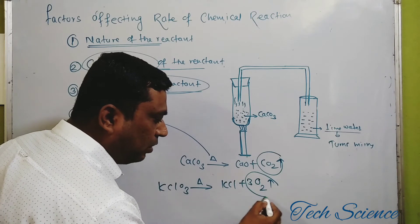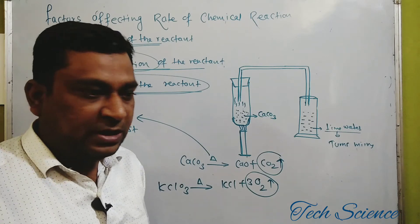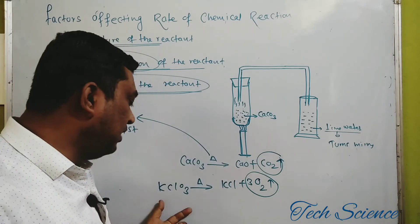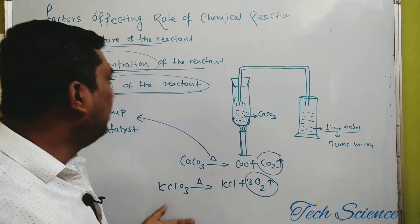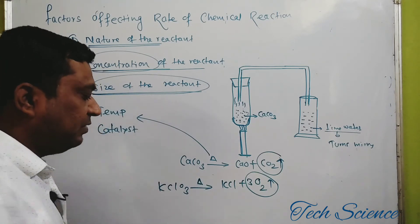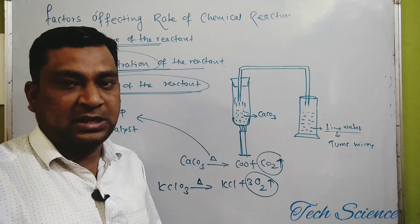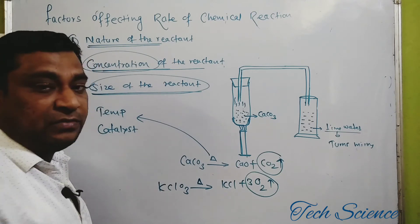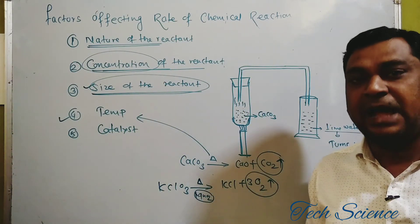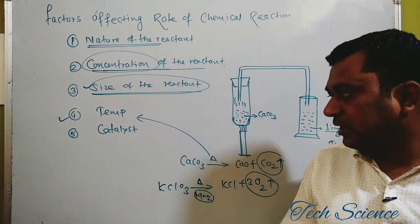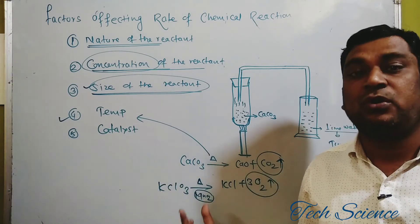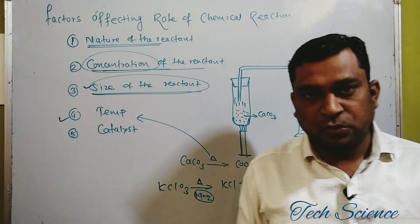If you want to increase the rate of oxygen gas liberation, you could try reducing the size of KClO3 particles or increasing the temperature. But both of these may not give the desired result. So, if you want to increase the rate of chemical reaction, you use manganese dioxide, MnO2, as a catalyst. When manganese dioxide is used as a catalyst, the rate of chemical reaction increases. Although it is not chemically involved in the reaction, the presence of the catalyst affects the rate. These are the five factors affecting the rate of chemical reaction.